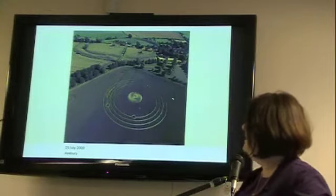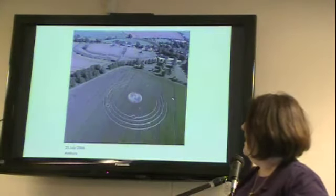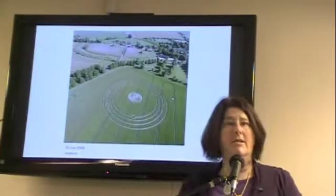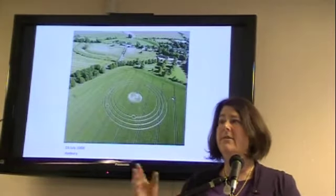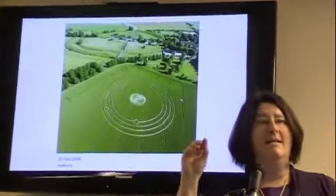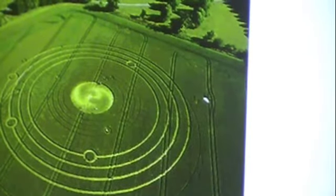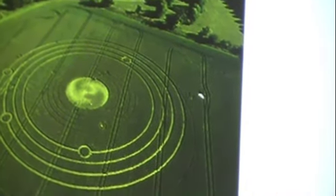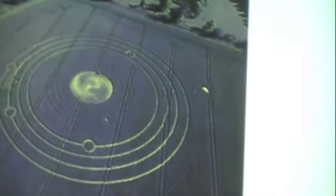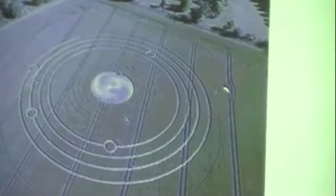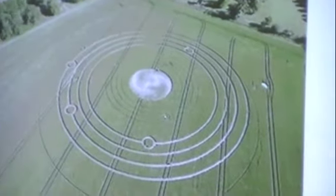This came down in 2008 and if you can see, it's a solar system, right? And there's a definite array of the planets and there's a date in there. Can you guess the date? Just off the top of your head? Well, it's definitely referencing December 21st, 2012.